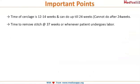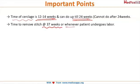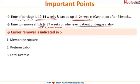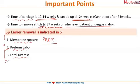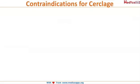The timing of cerclage is 12 to 14 weeks of gestation, and it can be done up to 24 weeks but not after. These stitches are removed at 37 weeks of gestation or whenever the patient goes into labor. Early removal of stitches is indicated in cases of pre-labor rupture of membranes, onset of preterm labor before 37 weeks, or fetal distress. In all these cases, stitches are removed and the patient is allowed to progress into labor or a caesarean section is performed as required.